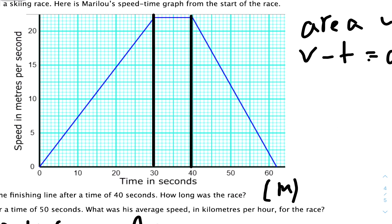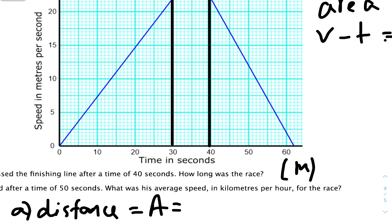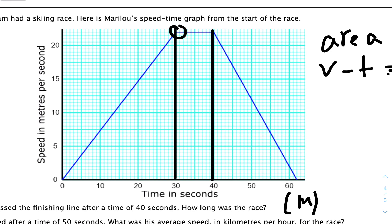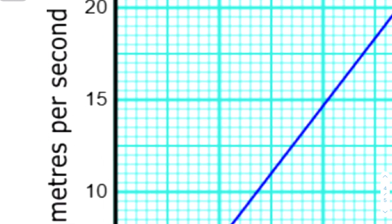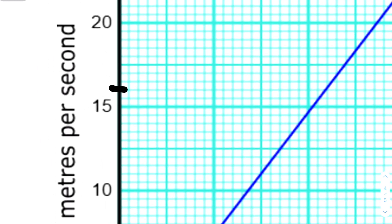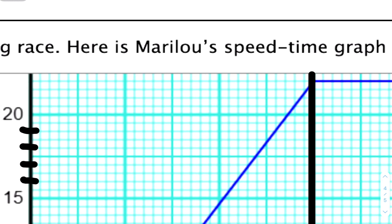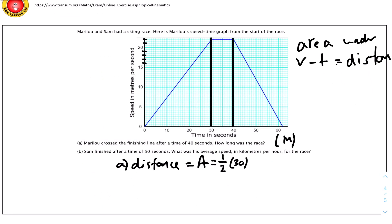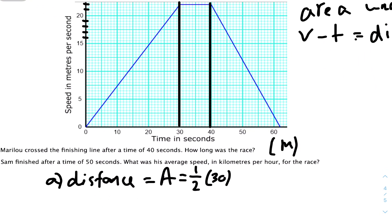We can find the area. Distance equals the area under 0 to 40 seconds. Here is 40 seconds right here. Let me draw a straight line from here to here. We have to split this into two different shapes: one triangle and one rectangle. The first triangle will be half base, which is 30 seconds, times height. The height will be this point here. Each two boxes goes up by 1, so we can see 15, 16, 17, 18, 19, 20. That means the height will be 20, 21, and 22.